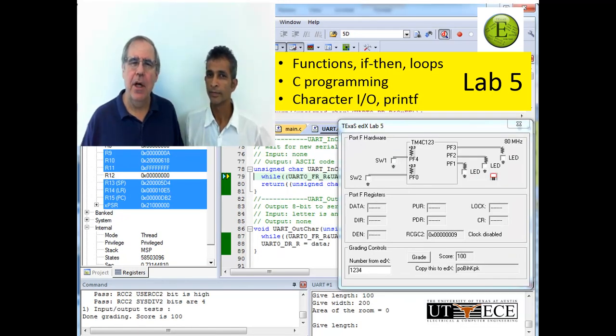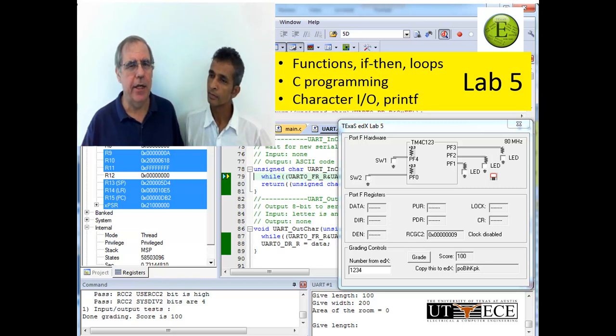In the next lab, we learned how to program in C. And the first concept was this idea of functions, or functional abstraction, where we would encapsulate one idea into a function and then use it. We had if-thens and loops, we did character I/O with a printf. And again, lab 5 was an introduction to the process of programming in C.